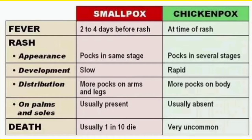What about the distribution? More pox are found on the arms and legs in case of smallpox — always remember arms and legs have more pox in smallpox. But in case of chickenpox, more pox are found on the body — centripetal distribution, meaning more on the body.